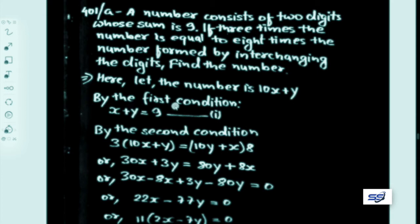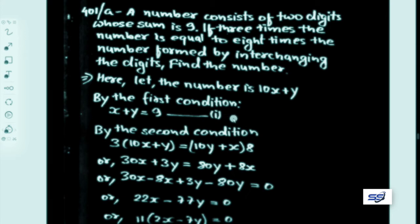From the first condition, the sum of the digits of our two-digit number is x and y, so x plus y equals 9. Let this be equation 1.